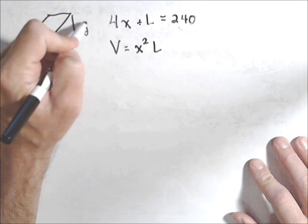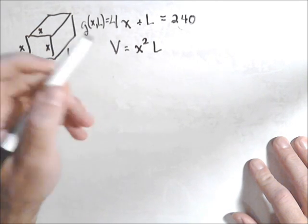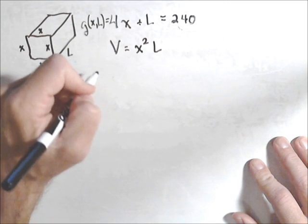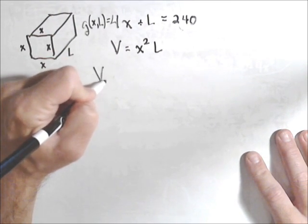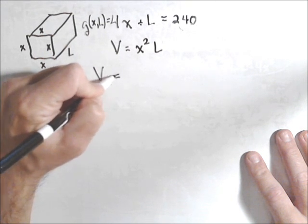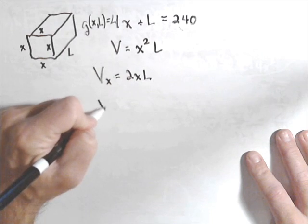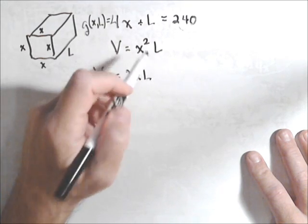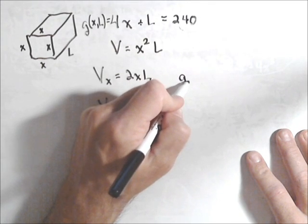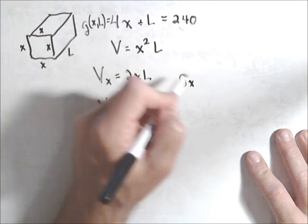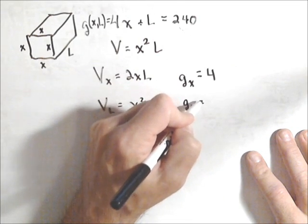So let's call this guy g of x, L here. And that will be v of x, L. And so using Lagrange multipliers, we need our partials. So v sub x will be 2xL. V sub L will be x squared. G sub x will be 4. And g sub L will be 1.